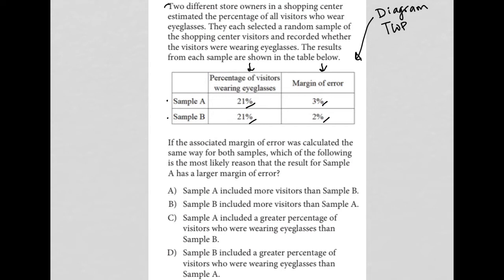The information up here says two different store owners in a shopping center estimated the percentage of all visitors who wear eyeglasses. They each selected a random sample of the shopping center visitors and recorded whether the visitors were wearing eyeglasses. We see that they both recorded 21%. The results from each sample are shown in the table below.